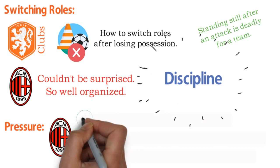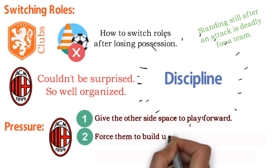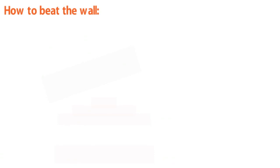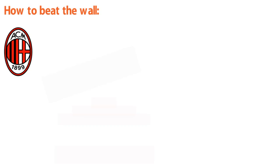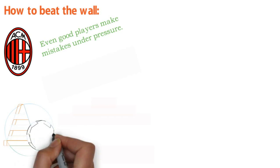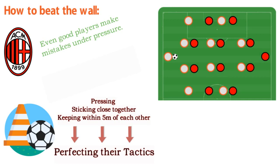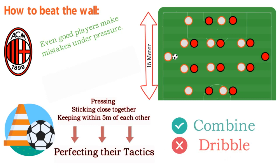Being so tightly organized, they first had to give the other side space to play forward. By forcing players to decide, they made them build up from their right or left back. Then, when they passed the ball into midfield, all 10 of them were ready to pounce on it to regain possession. At that time, there was no team outside Italy that knew how to deal with the way Milan players pressed. Even good players make mistakes under pressure. At training sessions, they practiced pressing and sticking close together, keeping within 5 meters of each other. When they were at the height of their game, they trained 11 against 11 on a half-size pitch no wider than the 16-meter area. You have to be able to combine, because it's impossible to dribble — it was not always fun, but it forced you to make quick decisions.